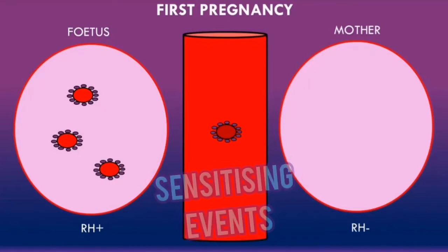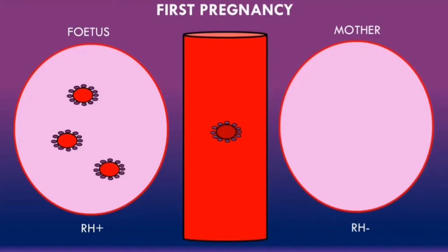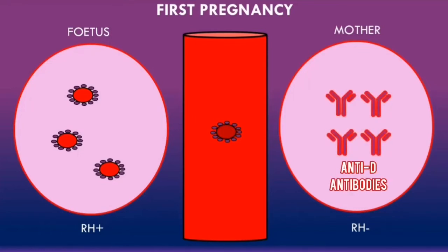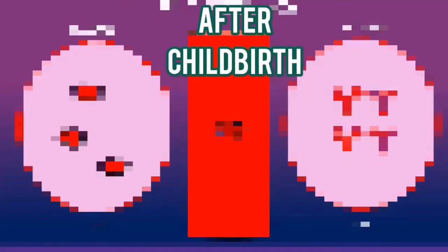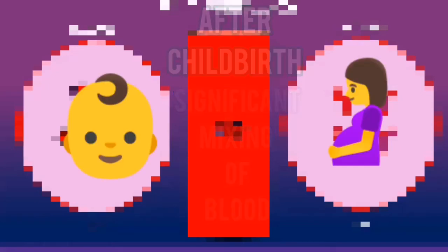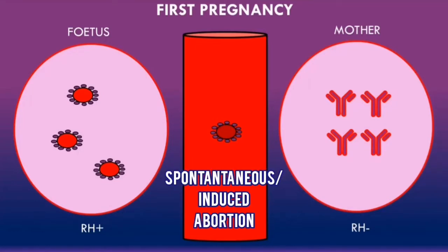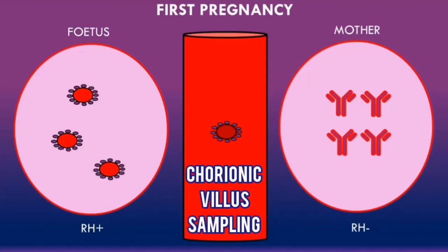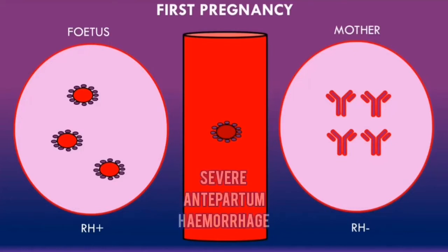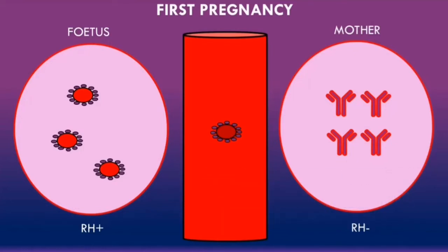However, there are situations where the fetal red blood cells can leak into the maternal circulation. These are examples of sensitizing events, as the mother's immune system will be exposed to the rhesus D antigens of the fetal red blood cells, causing the mother to produce anti-D antibodies. The most common sensitizing event is after childbirth, when there is significant mixing of fetal and maternal blood. Other examples include spontaneous or induced abortion, medical interventions such as chorionic villus sampling or amniocentesis, severe antepartum hemorrhage, or severe abdominal trauma.